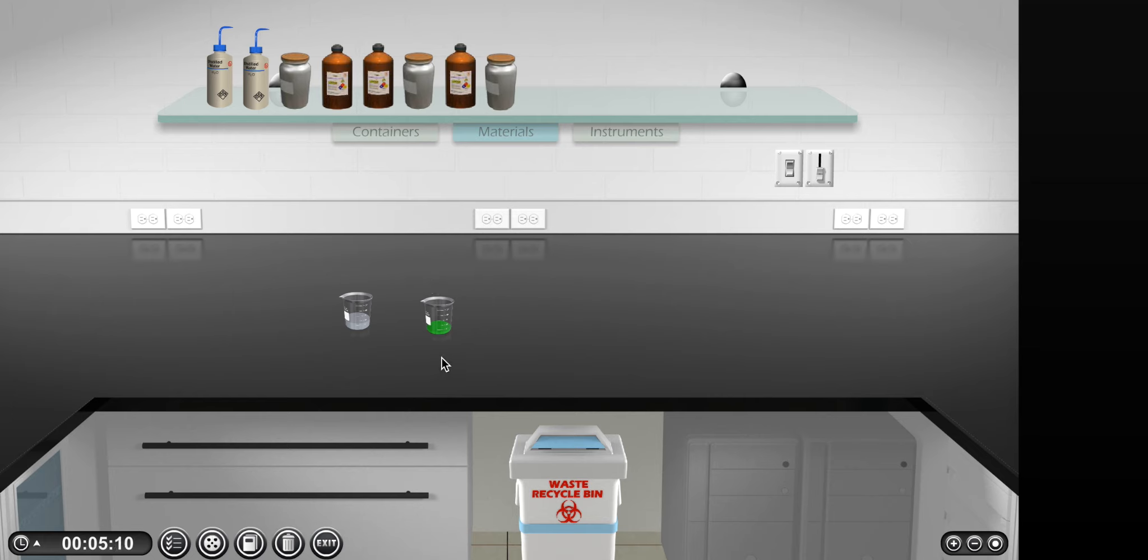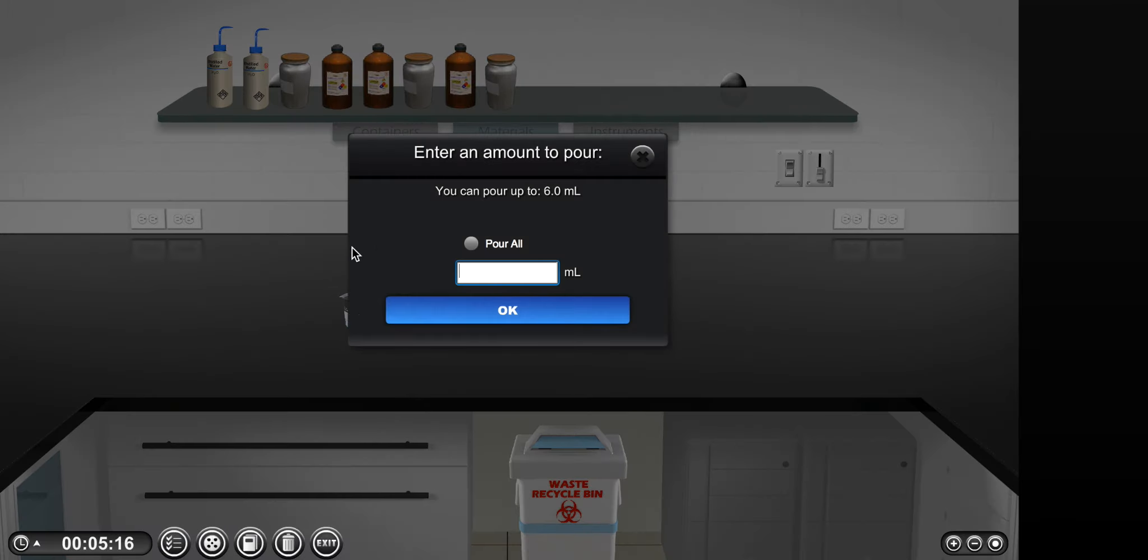In order to start the reaction, we will pour one beaker into the other. In this case, we will pour all of the nickel chloride solution into the sodium hydroxide solution.